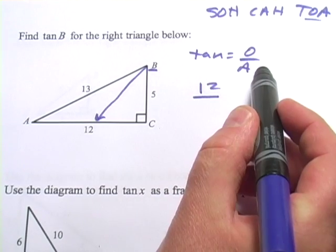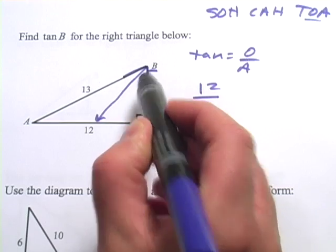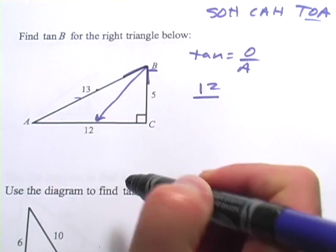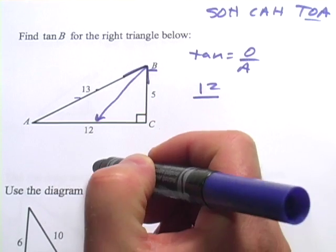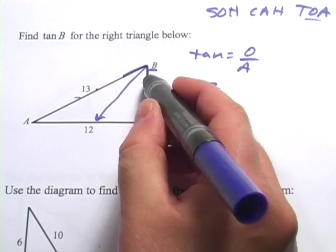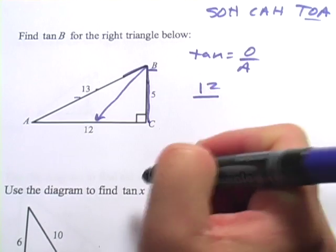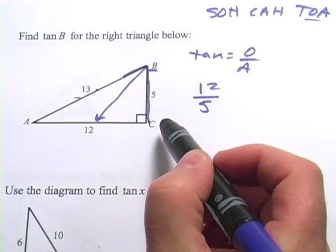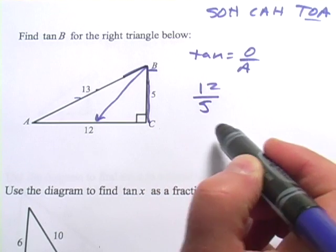And we want the adjacent side. And the question is, is it this one or this one? Well, it's not this one because this is already the hypotenuse. So that's got a definition. It's this side, then, that is the adjacent side to B. So the answer for this one, the tangent of B, is 12 fifths.